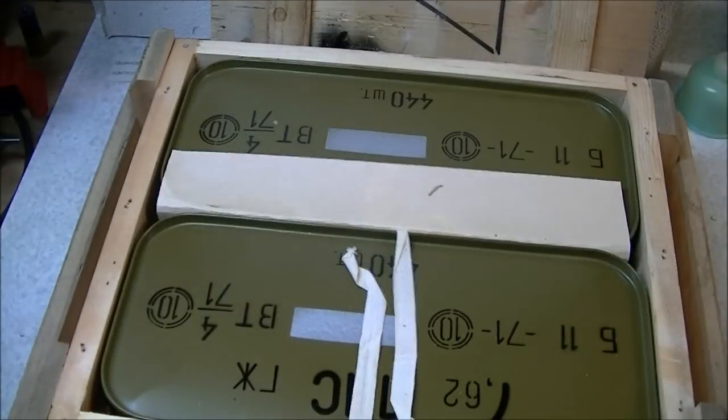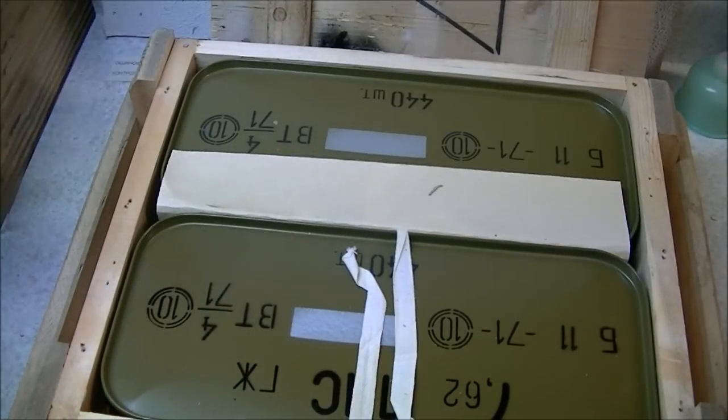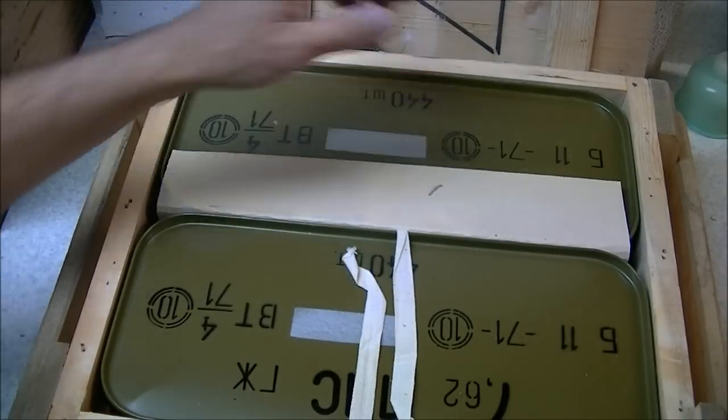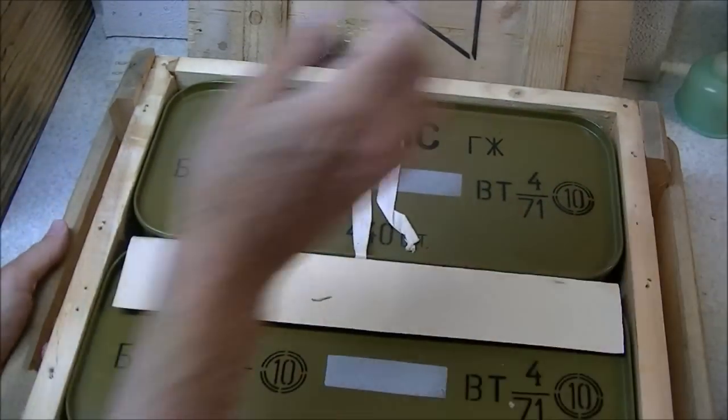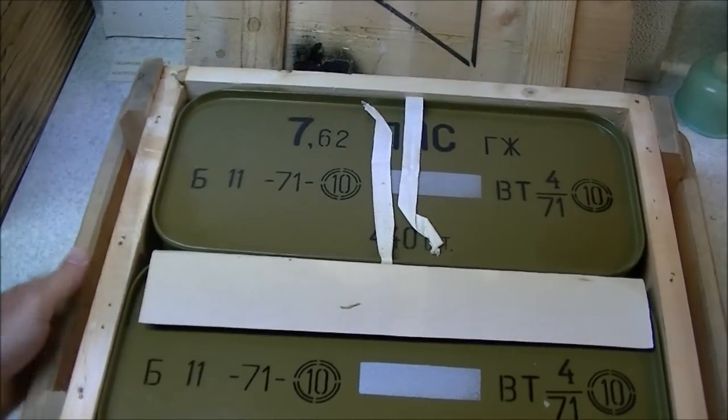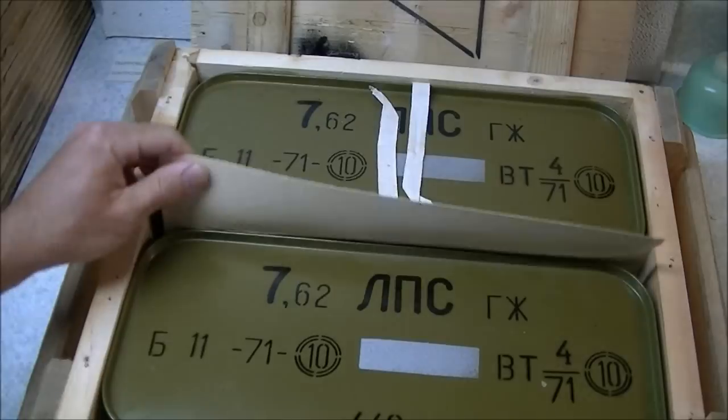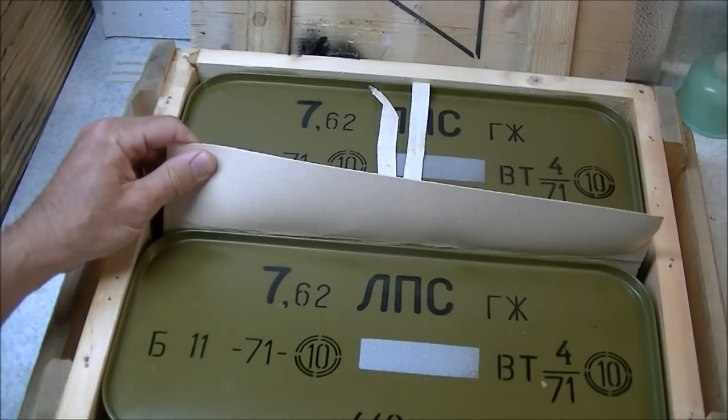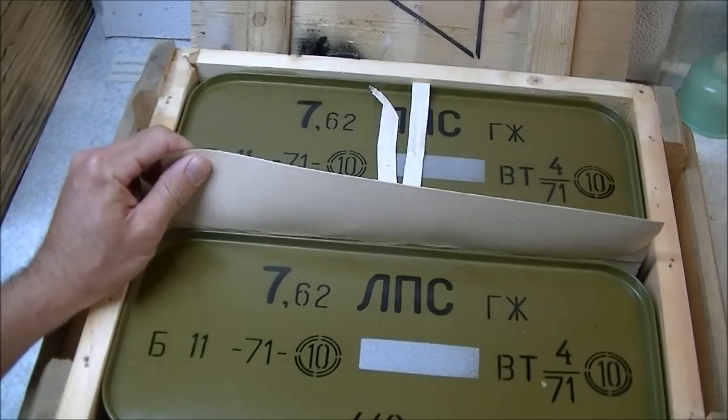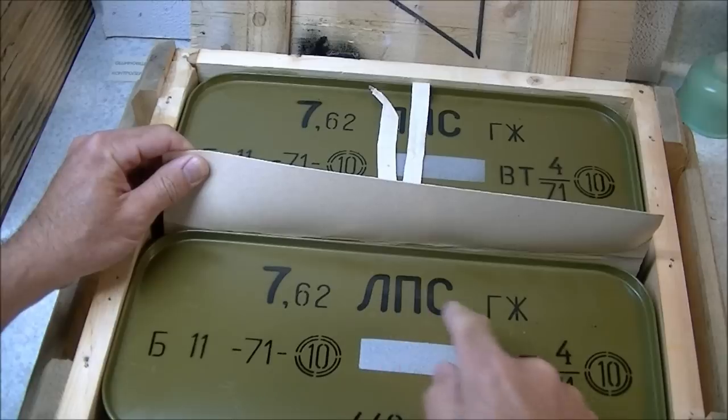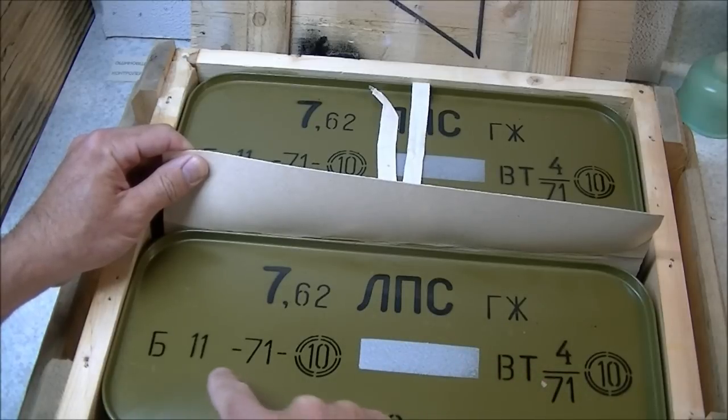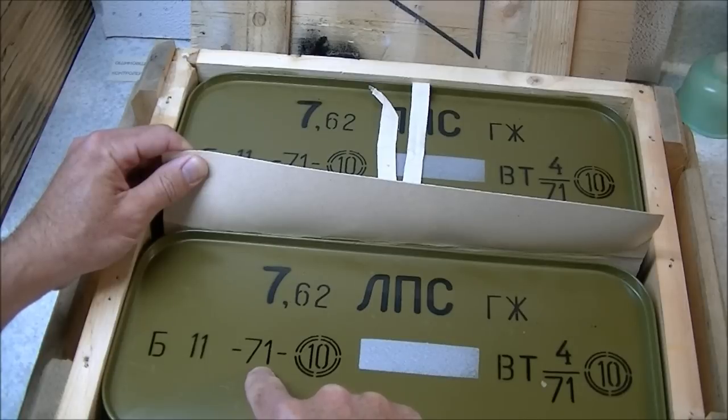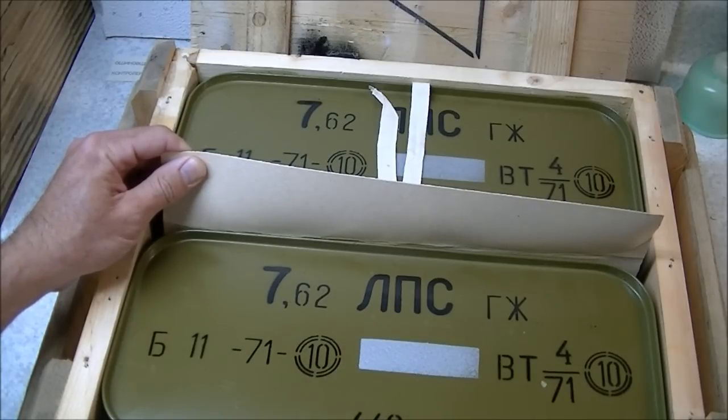As luck would have it, of course I opened it the wrong way. So we've got our two so-called spam cans in here. They contain 440 rounds each, 7.62. We've got the identification of the ammunition here - 1971 is a production year, factory code 10, which I understand is the Bulgarian arsenal which manufactured the ammo.